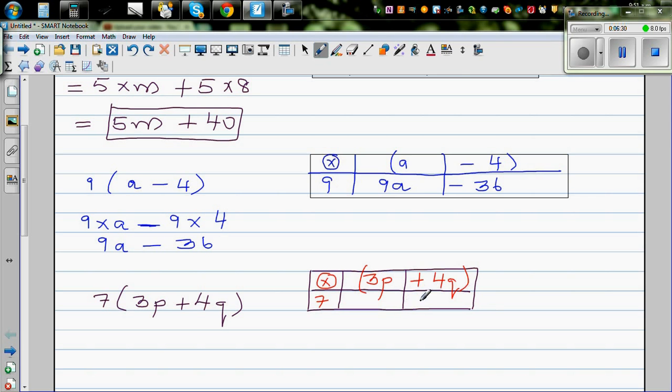You just multiply as you're multiplying numbers. So 7 times 3 is 21. And it's 7 times 3p. So this is 21p. And 7 times 4 is 28, plus 28q. So the final answer is 21p plus 28q. Thank you.